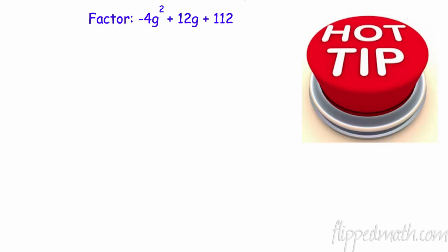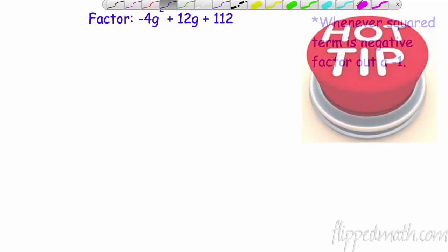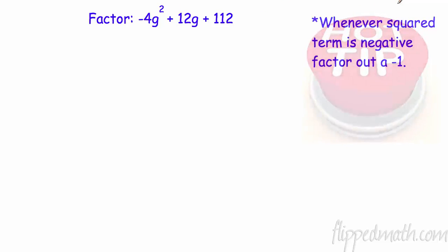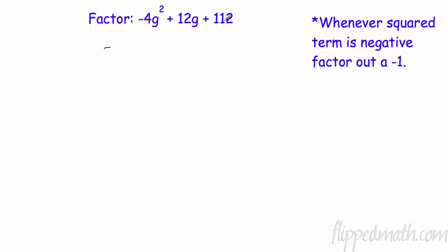All right, let's try a harder one. We have negative 4g squared plus 12g plus 112. Hot tip number two: whenever the squared term is negative, factor out a negative one. So if we have a negative at the beginning, we want to make sure we actually take a negative out. Does 4 go into 12? Yes. Does 4 go into 112? Let me check — yes, it goes in 28 times. So let's take out a negative 4.